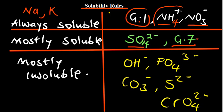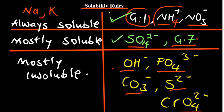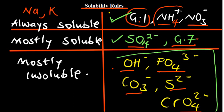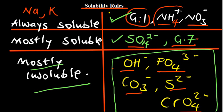Then the ones that are mostly insoluble are hydroxides, phosphates, carbonates, sulfides, and chromates. These are mostly insoluble with a few exceptions. What I can tell you is for the ones that are mostly insoluble, it is very easy to remember. All you have to know is the ones that are mostly soluble — sulfate and group 7 — and the things that are always soluble: group 1, ammonia, and nitrate. Those are the exceptions to the mostly insoluble category.